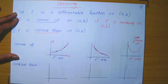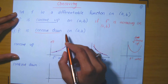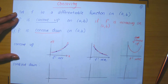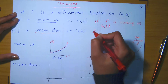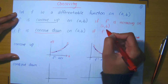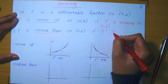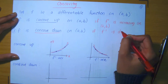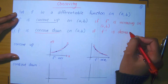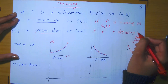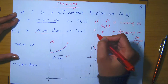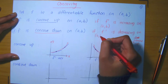Now what does it mean for f to be concave down on some interval? We say it's concave down if f' is decreasing on the interval (a, b).